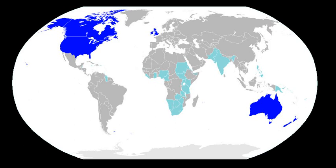English has a vast vocabulary, though counting how many words any language has is impossible. English speakers are called anglophones. Modern English grammar is the result of a gradual change from a typical Indo-European dependent marking pattern with a rich inflectional morphology and relatively free word order to a mostly analytic pattern with little inflection, a fairly fixed SVO word order, and a complex syntax. Modern English relies more on auxiliary verbs and word order for the expression of complex tenses, aspect, and mood, as well as passive constructions, interrogatives, and some negation. Despite noticeable variation among the accents and dialects of English used in different countries and regions, English speakers from around the world are able to communicate with one another with relative ease.